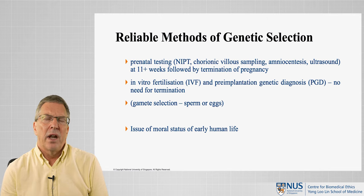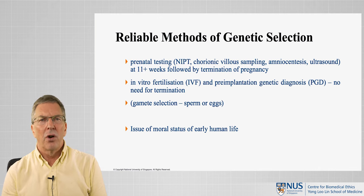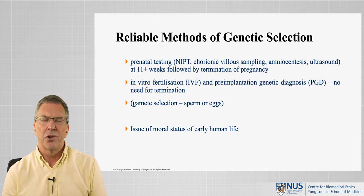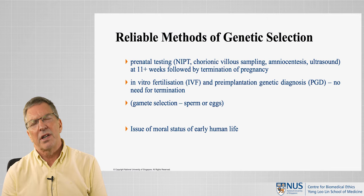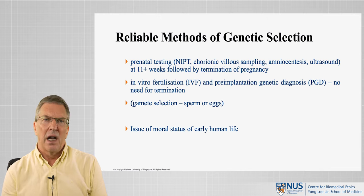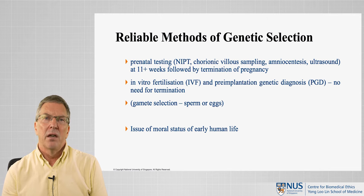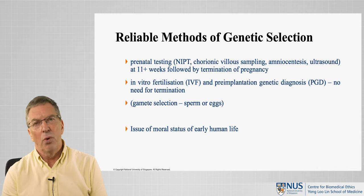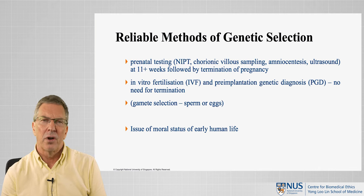So it's difficult to see why this potential invests significant moral status. In other areas, potential to become something does not mean that entity should be treated as if it were already that thing. For example, an acorn has the potential to be an oak tree, but it's not treated the same as a hundred-year-old oak. A prince has the potential to become a king but doesn't have the rights of a king. So the potential view has a number of problems, as do all of the lines used to ascribe moral status.